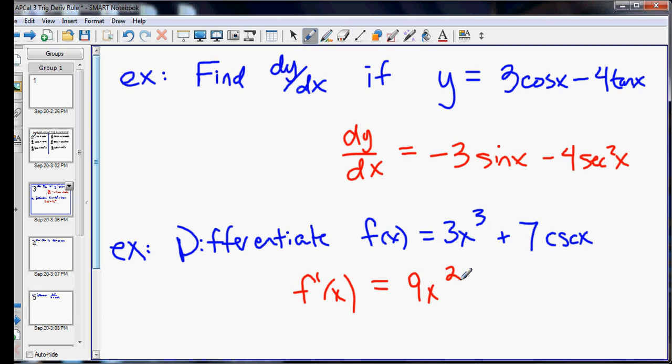And the derivative of cosecant, we leave the 7. The derivative of cosecant is negative cosecant x cotangent x.